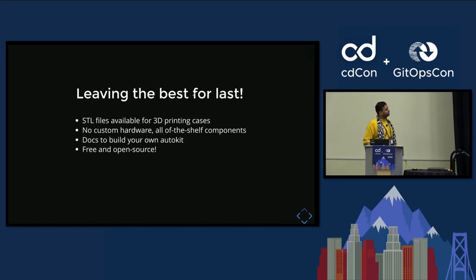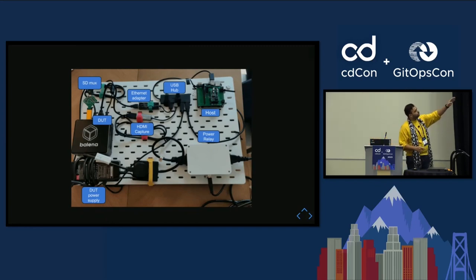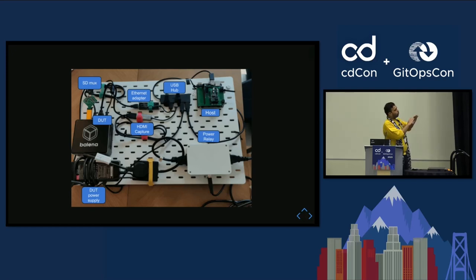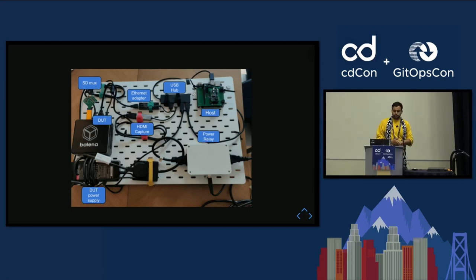Here's why I showed you the diagram — this is an AutoKit prototype we started working on. On the top right, you can see the host that controls the black box, which is the DUT (Device Under Test). It has an Intel NUC inside, and all these wires and components are controlling that DUT fully. So once you run an operating system test, it gets tested by this hardware right here.